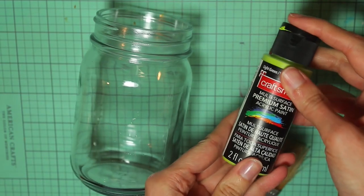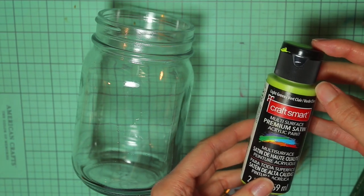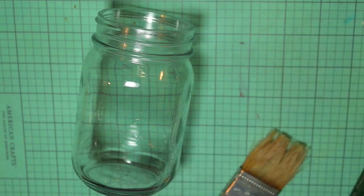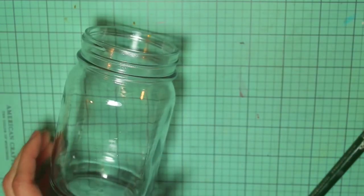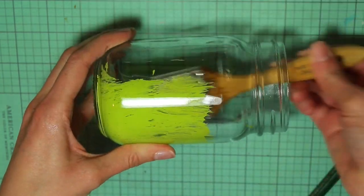Next you'll need some acrylic paint to paint the inside of the jar. I got this multi-surface green paint from Michaels. And I used two different paint brushes, this larger one to cover big areas and then a smaller one to get in the areas that I couldn't get with the larger one.